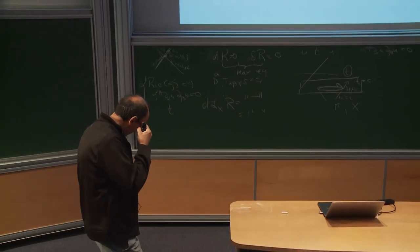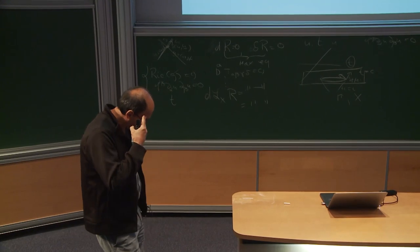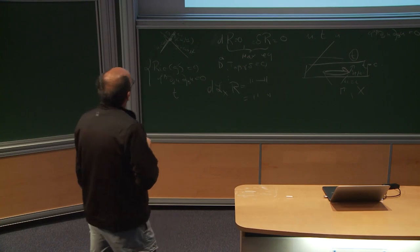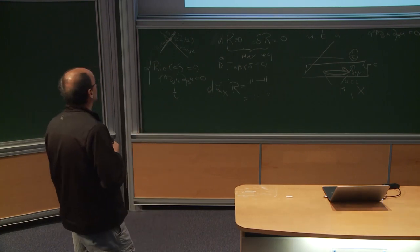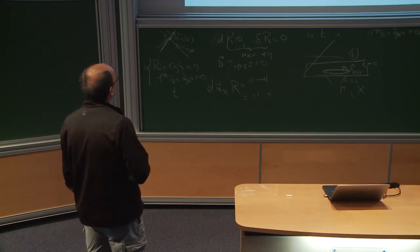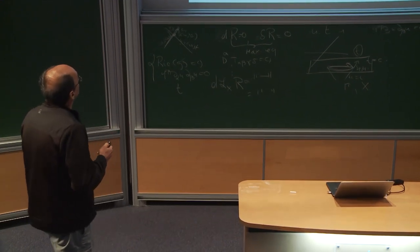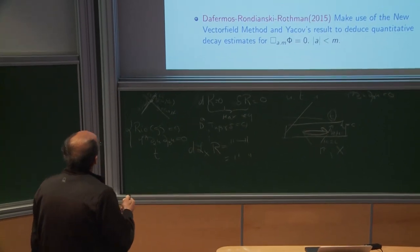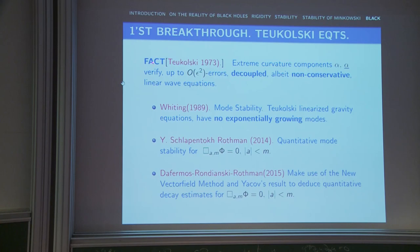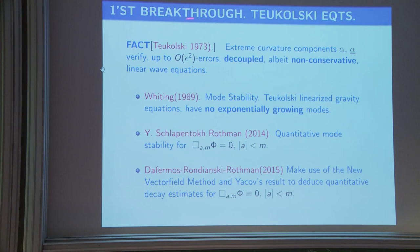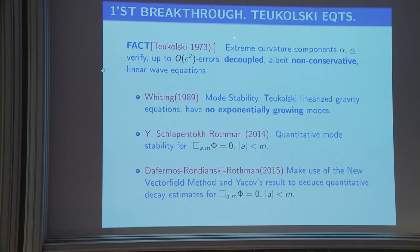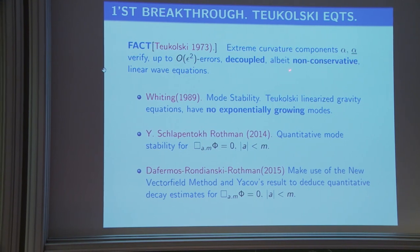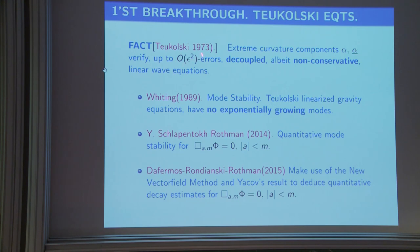There have been a lot of progress. In my view, the most important conceptual contributions to understanding the stability problem start with Teukolsky, who proved in 1973 — based on the work of many others — that the extreme curvature components alpha and alpha-bar, which are O(epsilon-squared) invariant, verify decoupled linear wave equations up to O(epsilon-squared) error terms. In linear theory, alpha and alpha-bar verify some equations that are not coupled with other components of the curvature or the Ricci coefficients — this is quite remarkable.